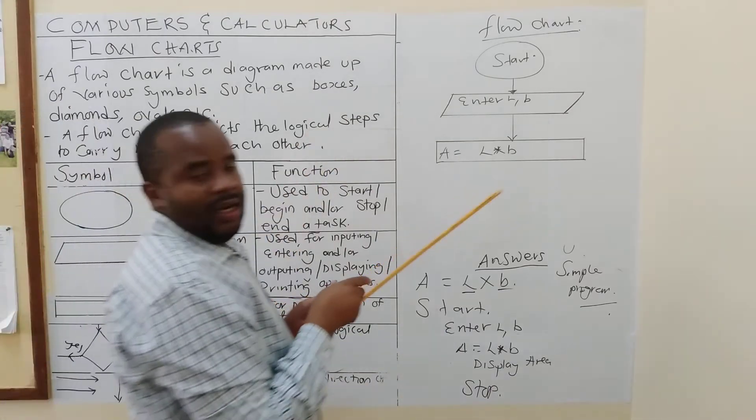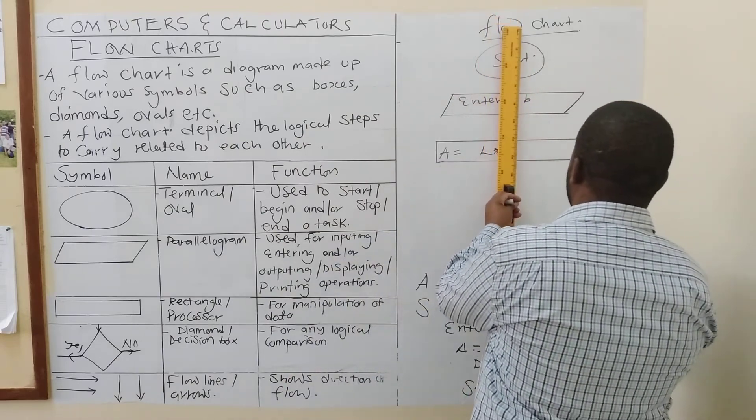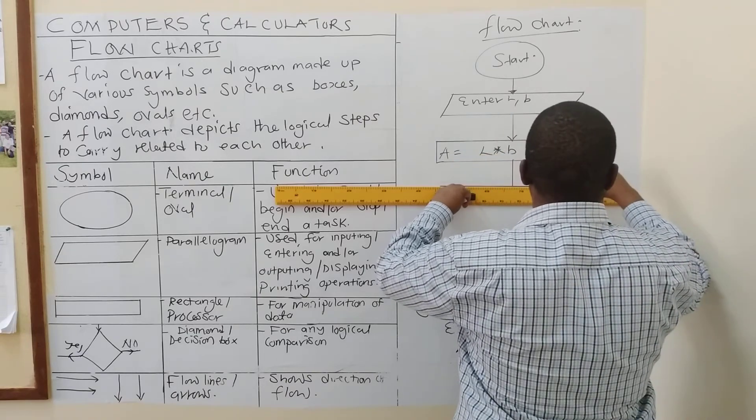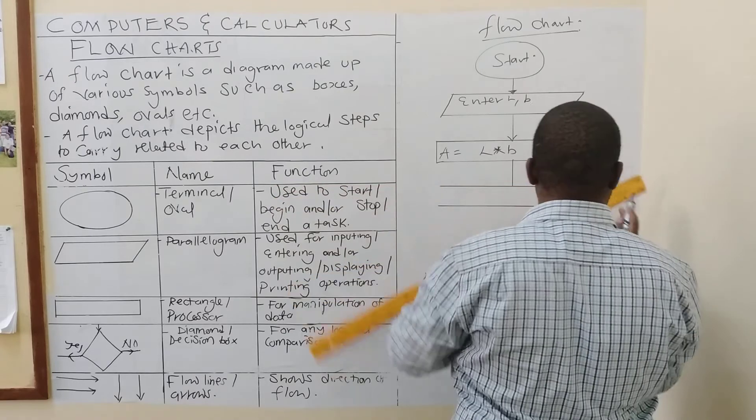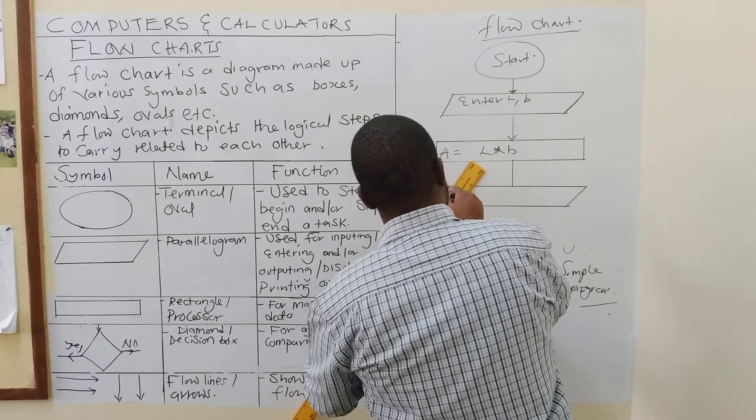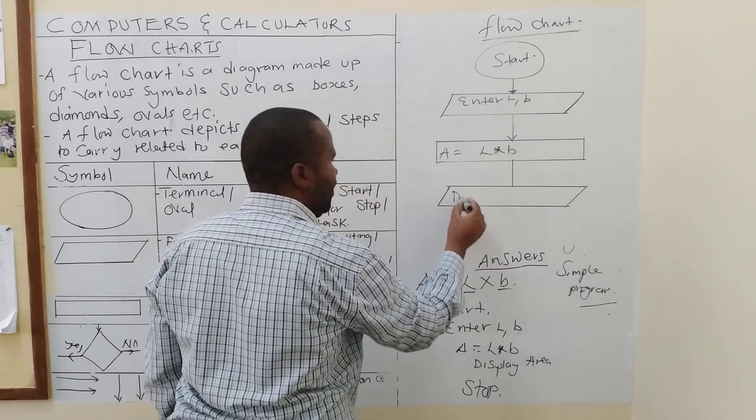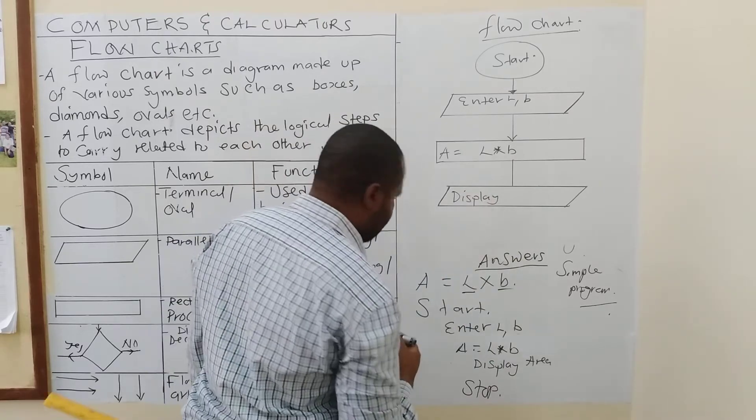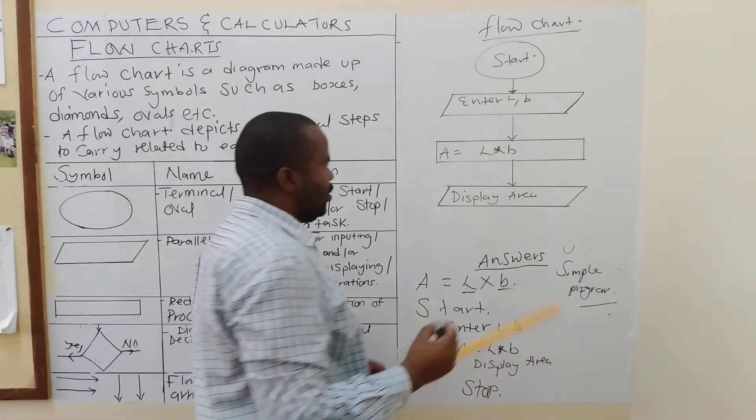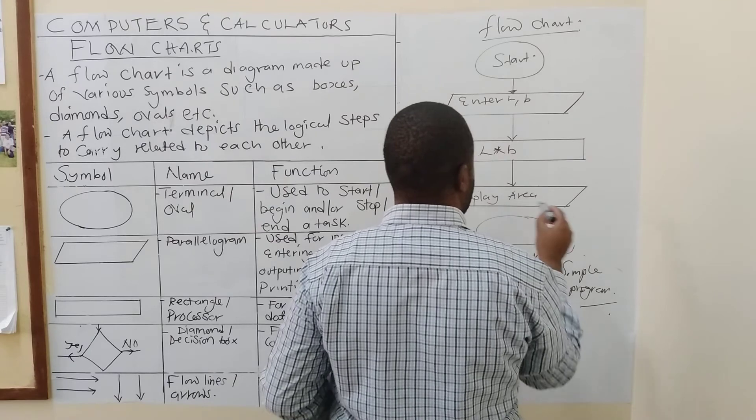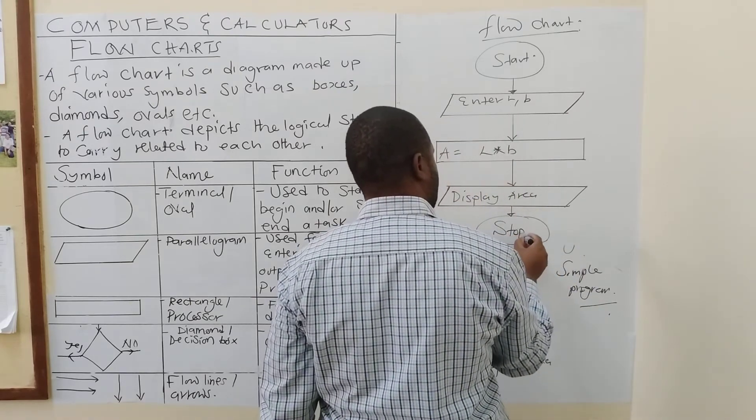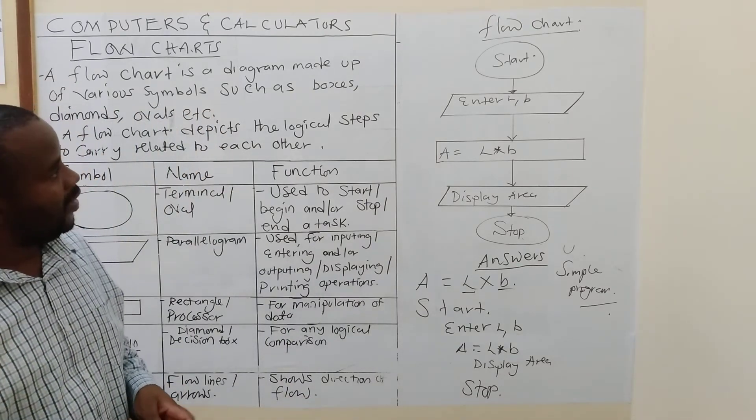Then, we are saying, let's display the area. Again, to display, we use the parallelogram. So, we bring another parallelogram here. So, we are going to say display. Instead of saying display, you could say output or print area. So, it has to give you the area there. Then, what is the last thing? You stop. It means it's done. That's how you are going to draw a very basic flowchart.